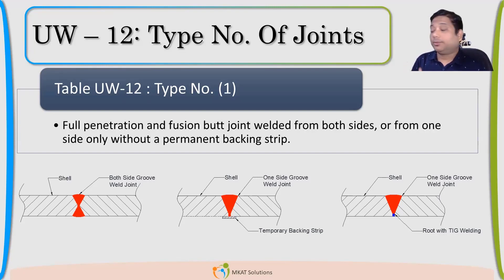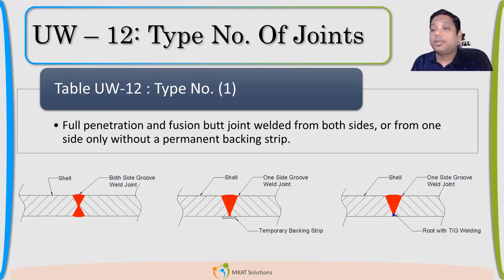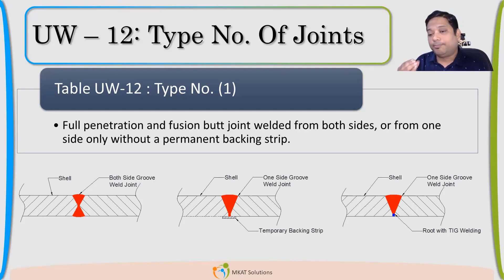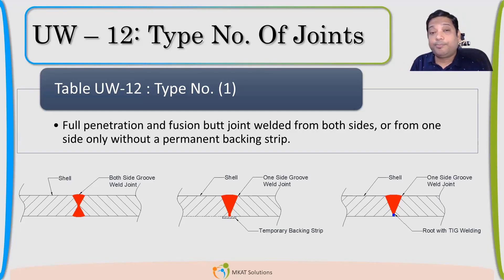The first statement: full radiography does not mean you will get joint efficiency as 1 always. It depends upon type of joint. Joint efficiency as 1 means the weld material is as good as base material. Any lack of fusion, any penetration problem, root fusion — all are taken care of by full radiography.